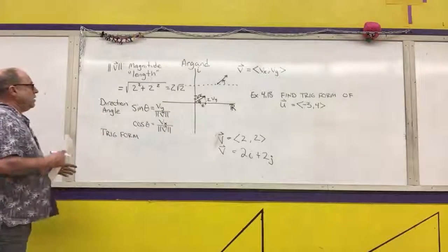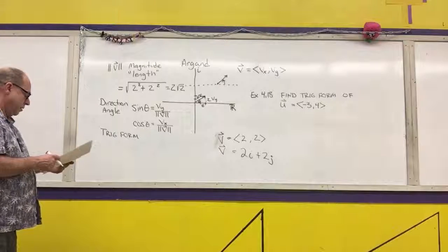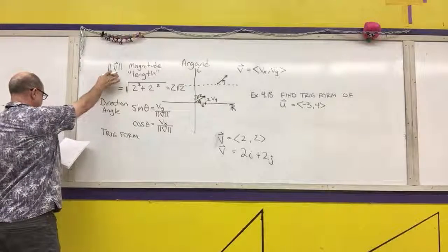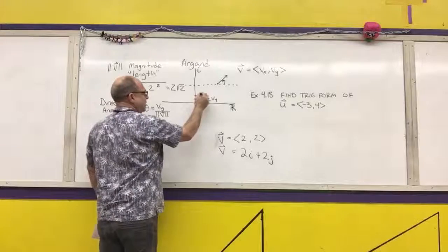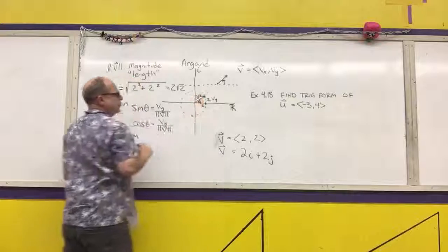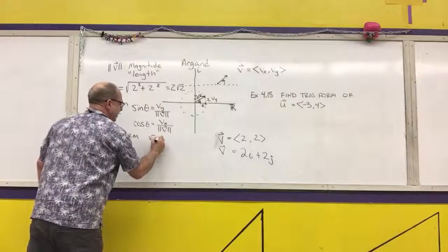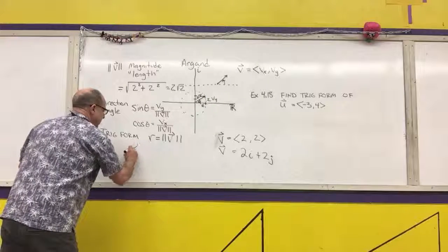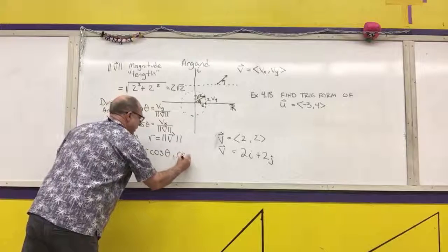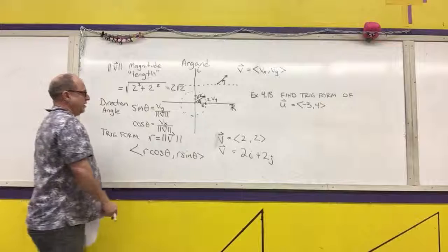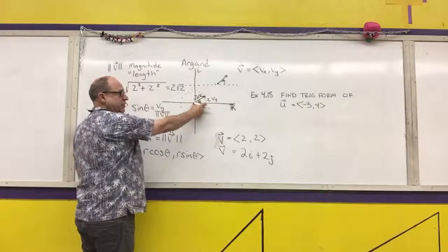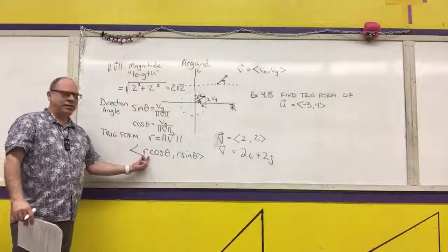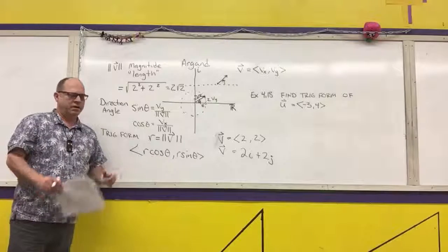The trig form relates to a circle where the magnitude r equals |v|. The trigonometric form is written as (r cos θ, r sin θ). Here r cos θ gives the horizontal distance and r sin θ gives the vertical distance. This relates vectors using their length and angle.